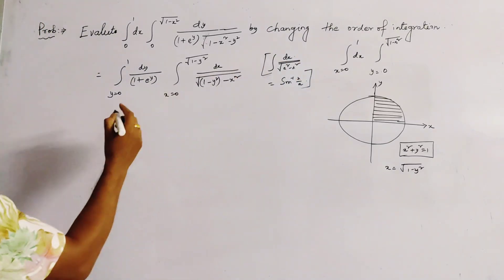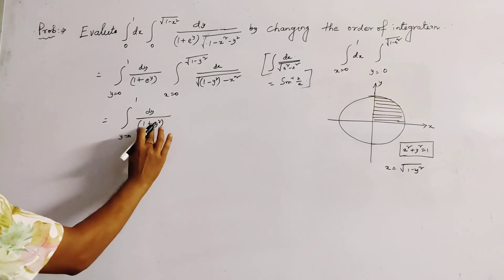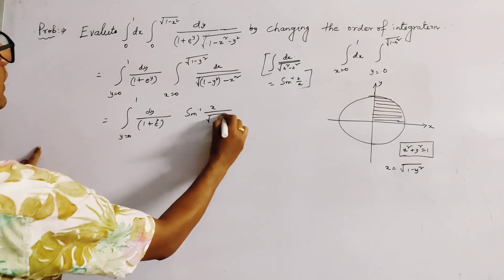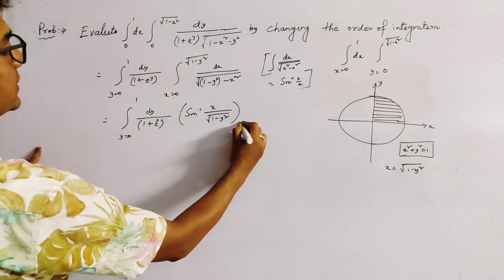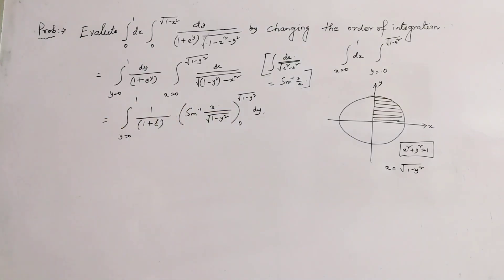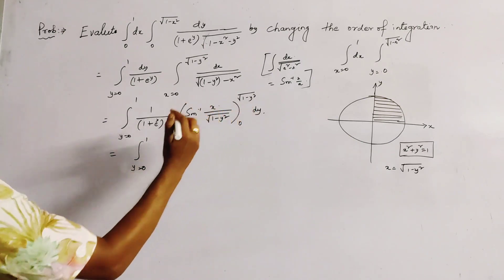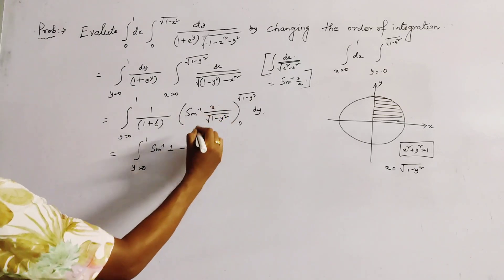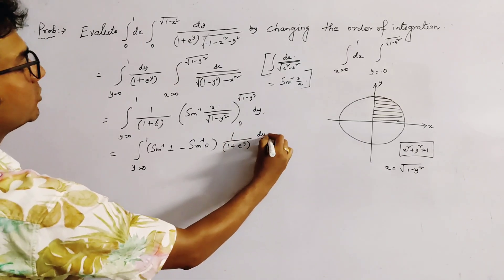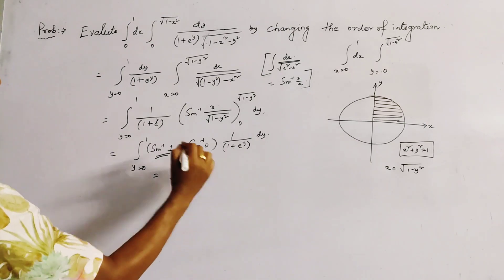Using this formula, we get the integral from y equals 0 to 1 of dy divided by (1 plus e to the power y), and applying sin inverse(x over a) with a squared equal to 1 minus y squared, with range 0 to root(1 minus y squared). Substituting the upper limit gives sin inverse(1) minus sin inverse(0), which is pi over 2 minus 0, leaving the integral from 0 to 1 of (pi over 2) divided by (1 plus e to the power y) dy.